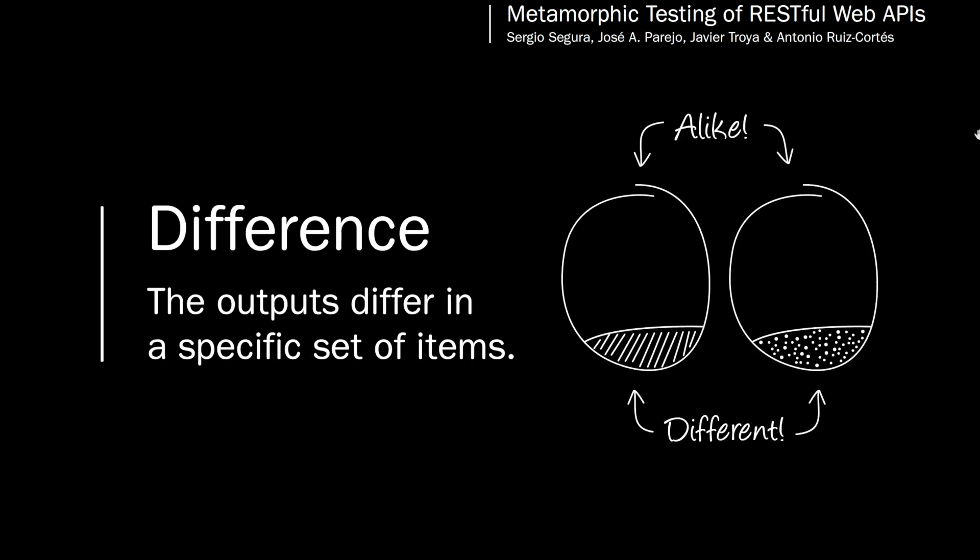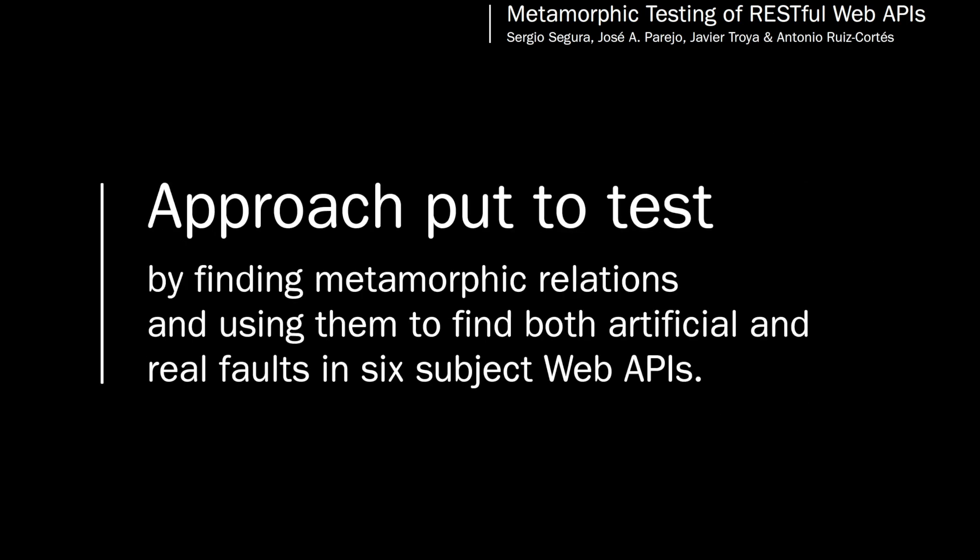Difference: a relation where the outputs differ in a specific set of items. To evaluate the proposed testing approach, the authors used it to identify metamorphic relations and find faults in six subject web APIs.